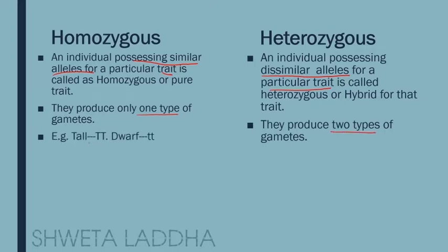For example, capital T capital T is homozygous for tallness, and small t small t is homozygous for dwarfness. Homozygous produces only one type of gamete — capital T only, or small t only. Whereas a heterozygous or hybrid capital T small t produces two types of gametes: capital T and small t.